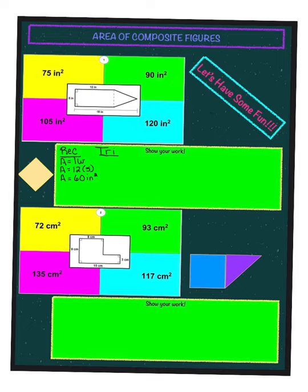Now we need to find the area of our triangle, so we write our formula: area equals base times height divided by 2. Looking at the composite figure, there is no number given for the base, but we already know it because it's connected to the rectangle. Since one side of the rectangle is 5 inches, the opposite side is also 5 inches, so the base of our triangle is 5.